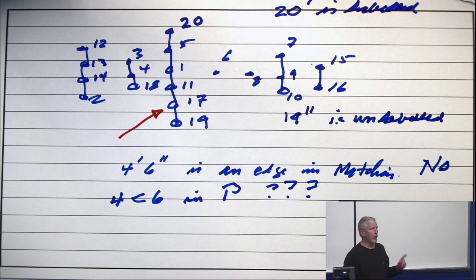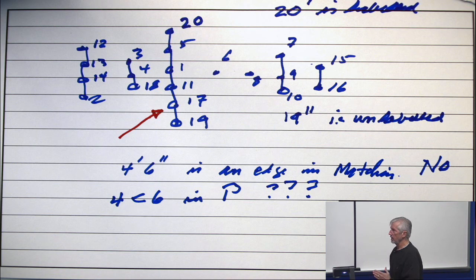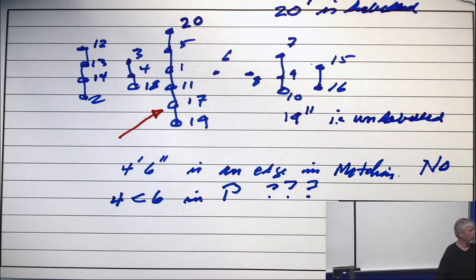Is there any flow on the edge between 19 and the sink? 19 double prime. Here's 19 double prime, here's the edge to the sink. Is there any flow on that edge?